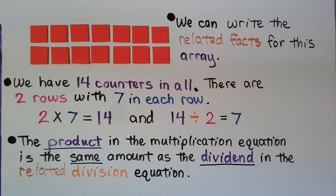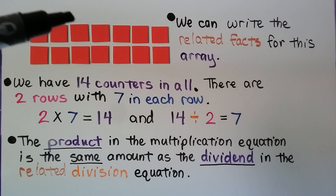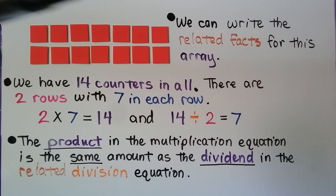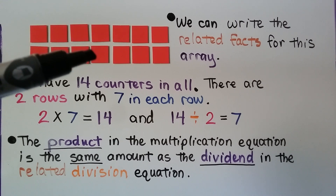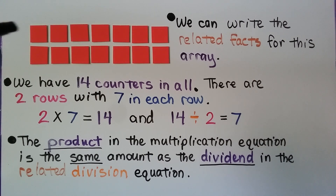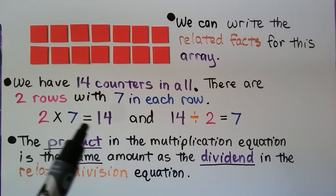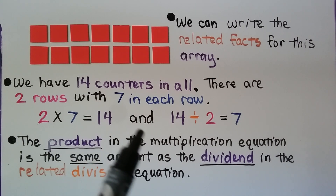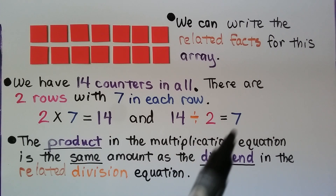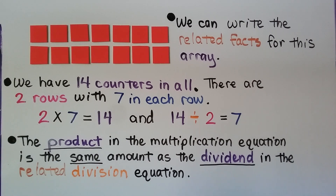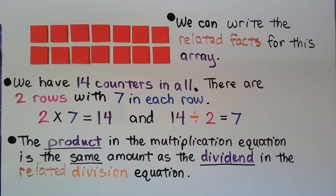We can write the related facts for this array. We have 14 counters in all. There are 2 rows with 7 in each row. We can write 2 times 7 is equal to 14 and 14 divided by 2 is equal to 7. The product in the multiplication equation is the same amount as the dividend in the related division equation.